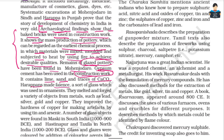Fine tin-glazed pottery — also called earthenware or glazed earthenware — was used for decoration. Harappans also made faience, a sort of glass, which was used in ornaments. They melted and forged a variety of objects from metals such as lead, silver, gold and copper, and improved the hardness of copper for making artifacts by using tin and arsenic.